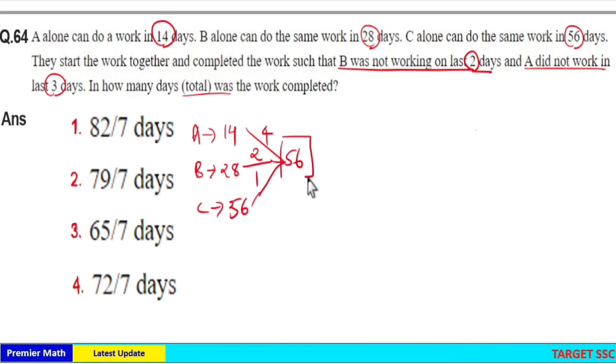Total work is 56 and A can complete 4 units in 1 day, B can complete 2 units in 1 day and C can complete 1 unit in 1 day.